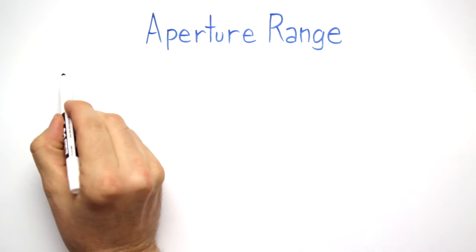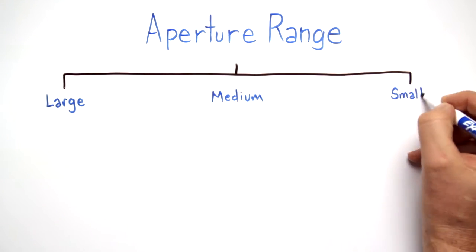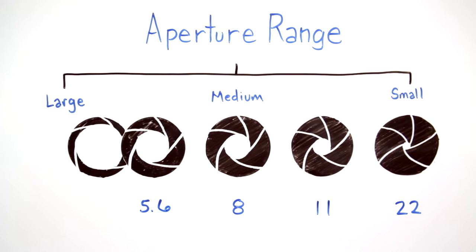Another important lens consideration beyond focal length is the maximum available aperture. Aperture, like the pupil of the human eye, can adjust to let in more light.